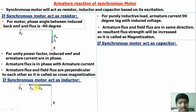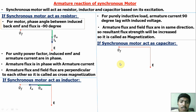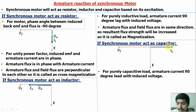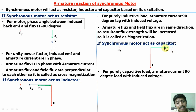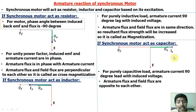If the synchronous motor acts as a capacitor — zero leading power factor — the phase angle between induced back-EMF and flux is −90 degrees. For a capacitive load, armature current leads the induced voltage by 90 degrees. Armature flux is in phase with armature current. Here, field flux and armature flux are in opposite directions, so the resultant flux will be decreased — this is called demagnetization.